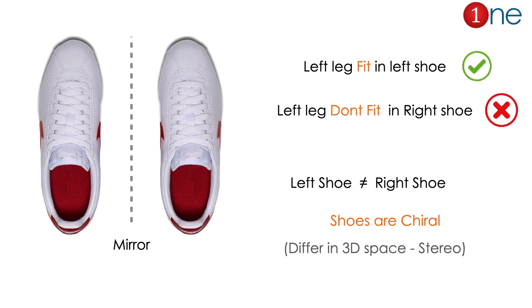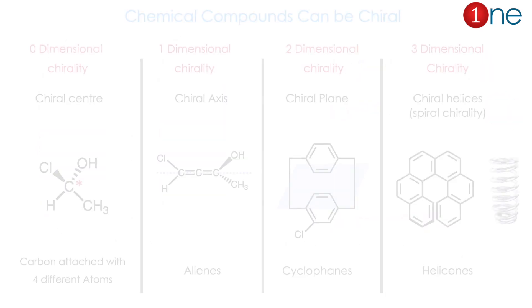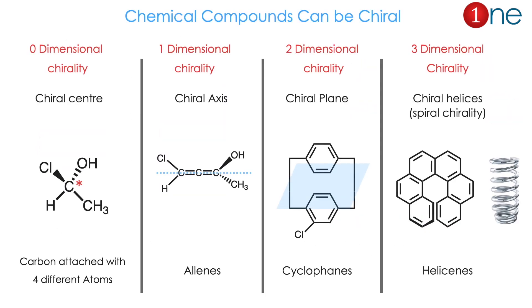You cannot wear the opposite. So the left shoe is definitely not equal to the right shoe. The shoes are chiral — they differ in 3D space. This is called a stereo, or spatial, difference.